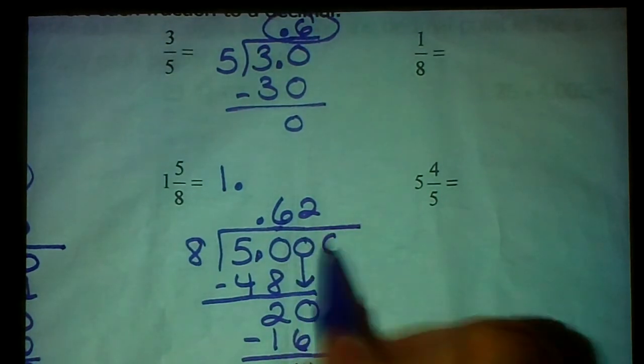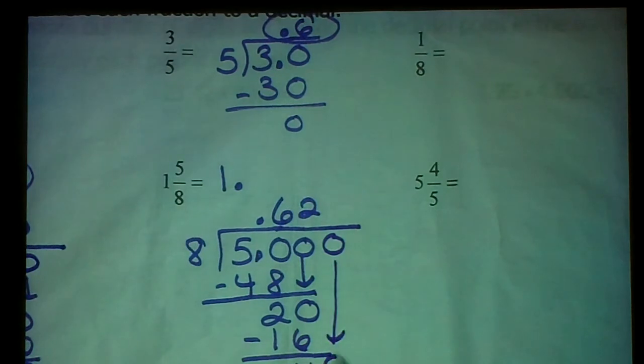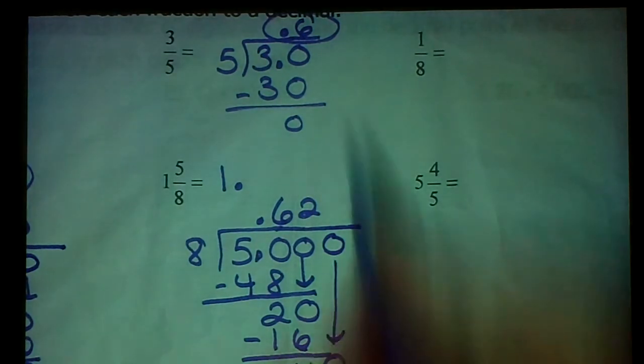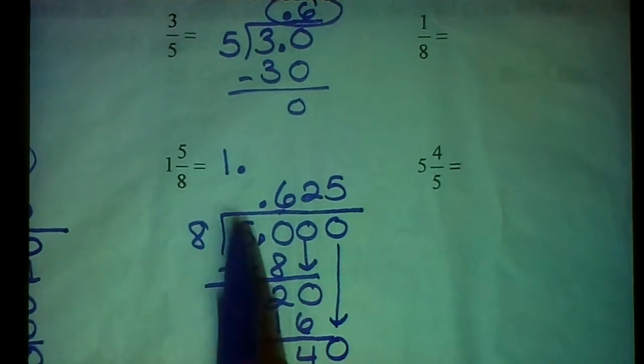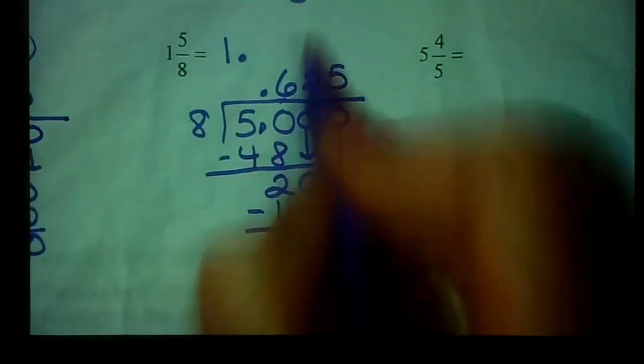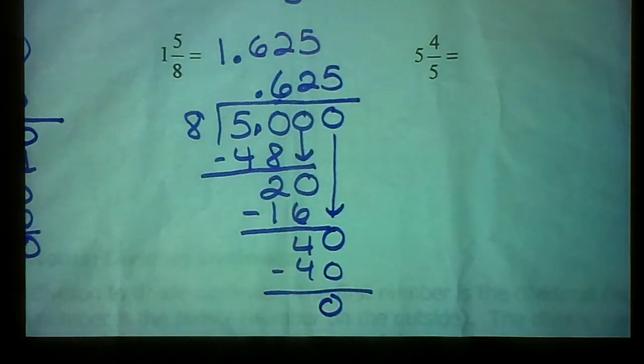Oh, you can always add more 0s. Good times ahead. All right, 8 goes into 40 five times exactly because 8 times 5 is 40, which means I have no remainder. And that means that 1 and 5/8 is equivalent to 1 point 625, or 1 and 625 thousandths to you and me.